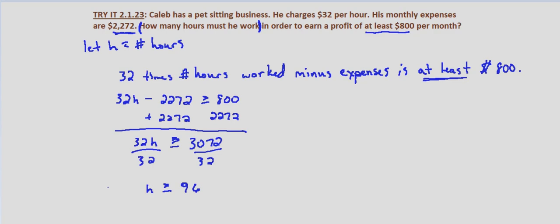So tentatively, Caleb must work at least 96 hours.